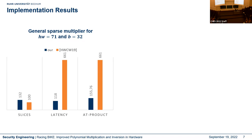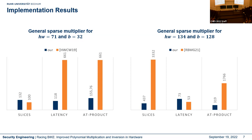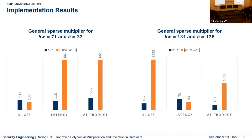Our area-time product is better than the 2019 implementation. We also compared our sparse multiplier to the first BIKE hardware implementation from last year, instantiated for Hamming weight 134 and b equal to 128. Compared to that schoolbook multiplication, we use definitely less hardware resources; our latency is slightly worse, but our area-time product is better overall.